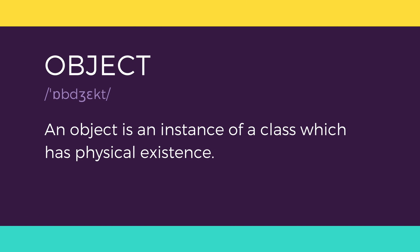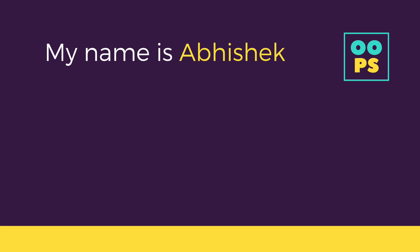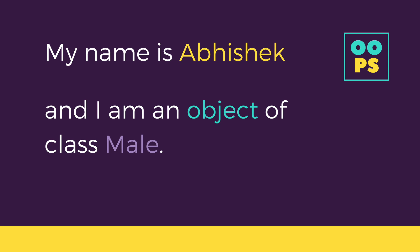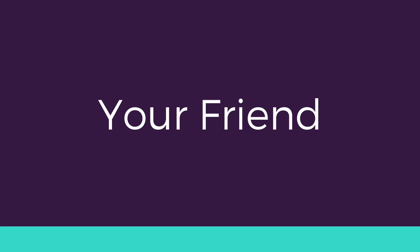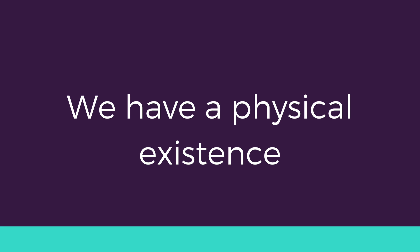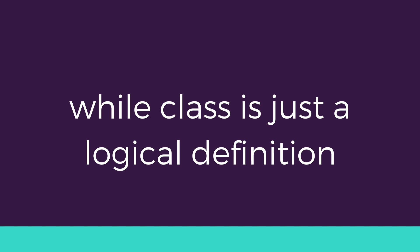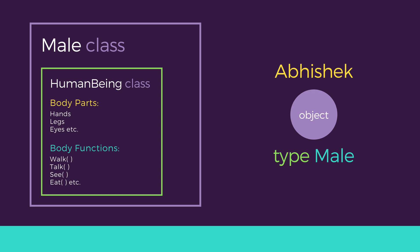Next is object. My name is Abhishek and I am an instance of class male. When we say human being, male, or female, we just mean a kind. You, your friend, me — we are the forms of these classes. We have a physical existence while a class is just a logical definition. We are the objects. So male is a class of which I am an object — an object with the name Abhishek.